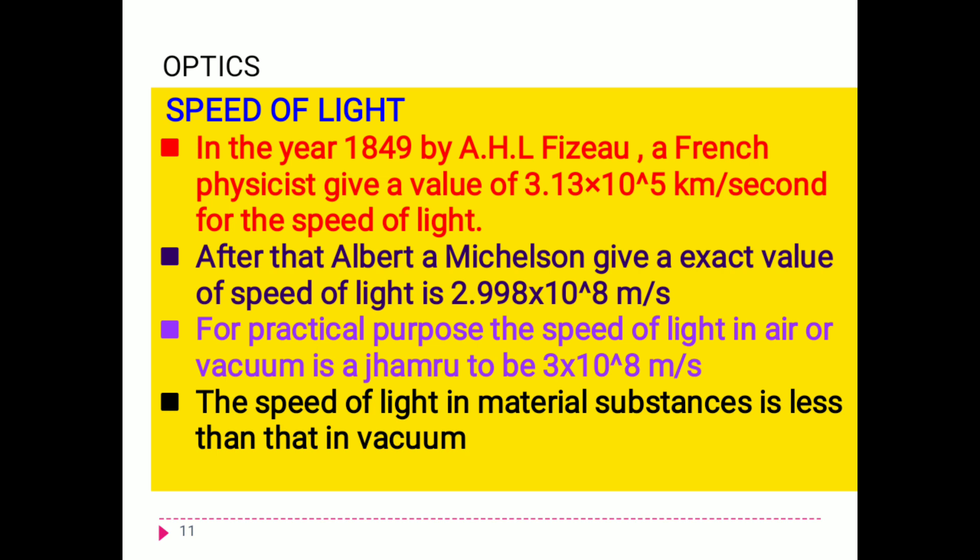Now, speed of light. The speed of light is 3 × 10⁸ meters per second. In the year 1849, the French physicist H. L. Fizeau gave a value of 3.13 × 10⁵ kilometers per second. After that, Albert Michelson gave the exact value of the speed of light as 2.998 × 10⁸ meters per second. For practical purposes, we use 3 × 10⁸ meters per second.